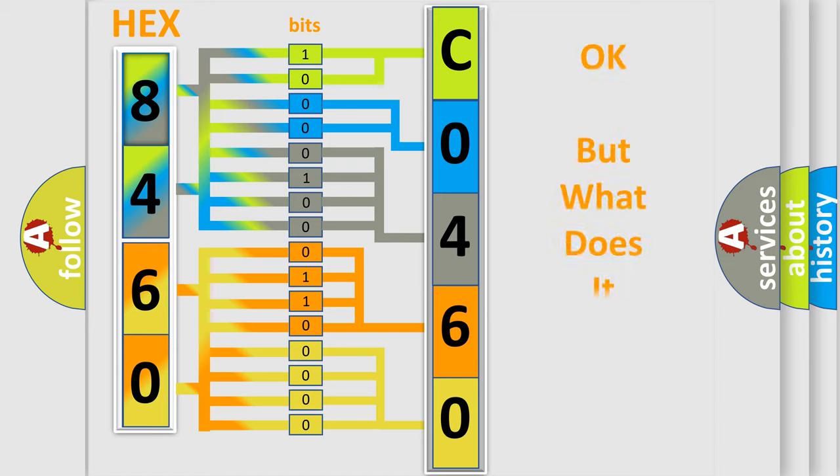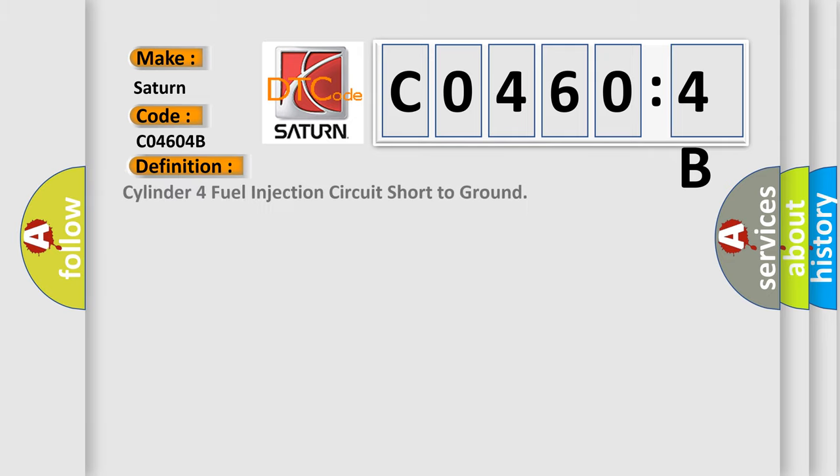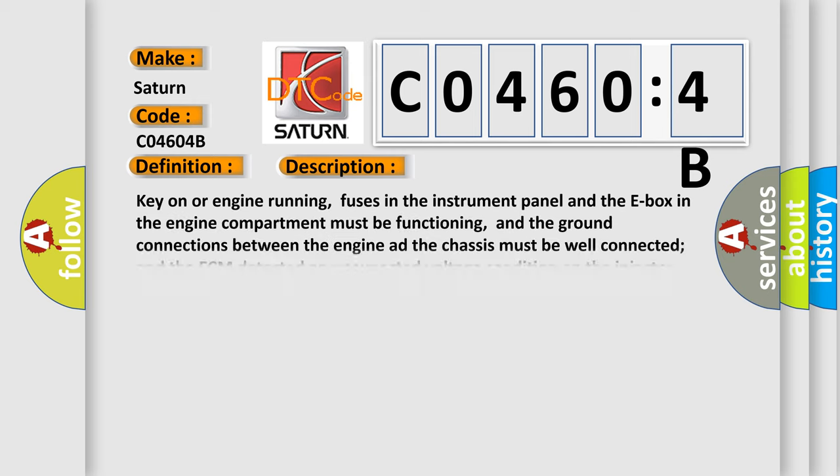The number itself does not make sense to us if we cannot assign information about what it actually expresses. So, what does the diagnostic trouble code C04604B interpret specifically for Saturn car manufacturers? The basic definition is cylinder 4 fuel injection circuit short to ground.